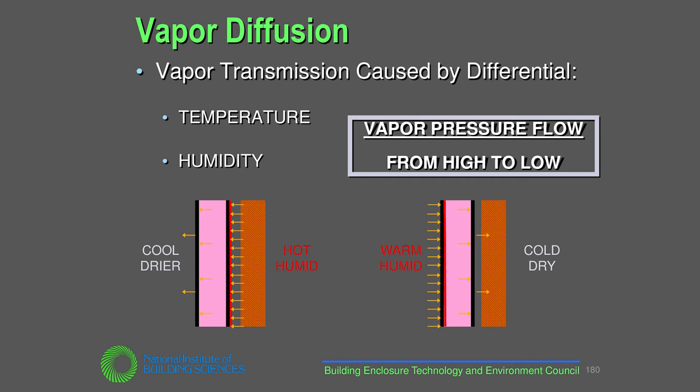Vapor diffusion is a transmission caused by a differential in air temperature fed by humidity, flowing from higher to lower vapor density. In hot, humid climates it flows primarily from exterior to interior; in cold, humid climates it flows interior to exterior; and in mixed climates it goes both ways depending on the season. The big concern is when vapor hits the dew point temperature and you can't dry the assembly out correctly - that's when you get serious problems.